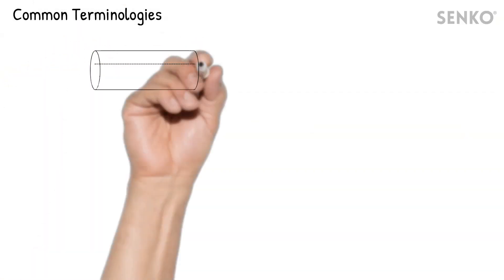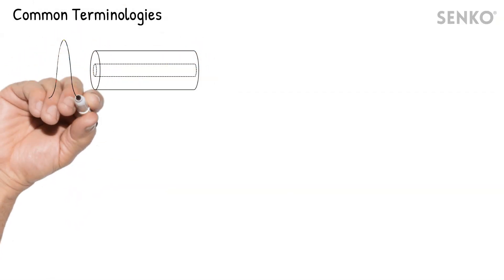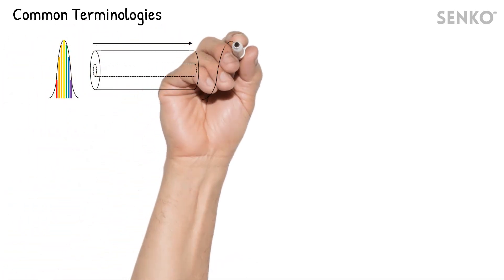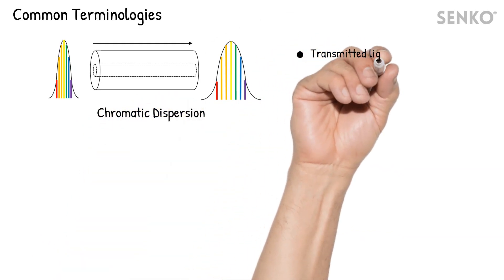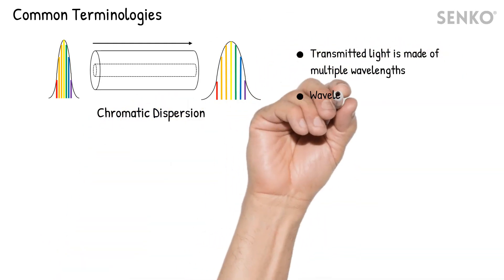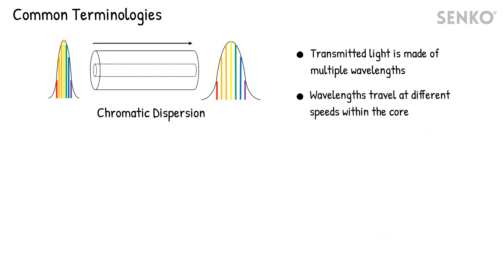Light is made up of a range of wavelengths, which propagates at a slightly different velocity in the optical fiber. Over long distances, the difference of velocity causes the wavelengths to spread, and this effect is called chromatic dispersion.